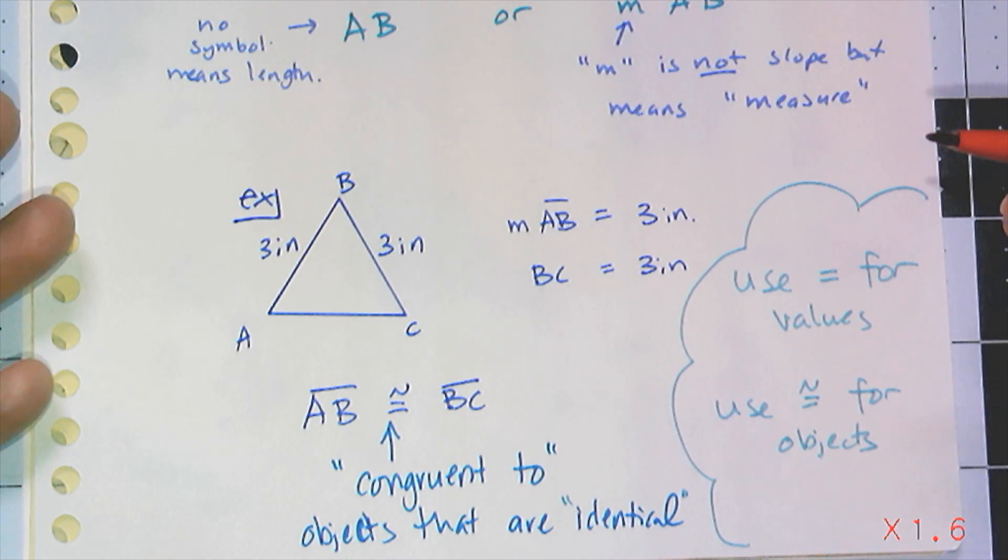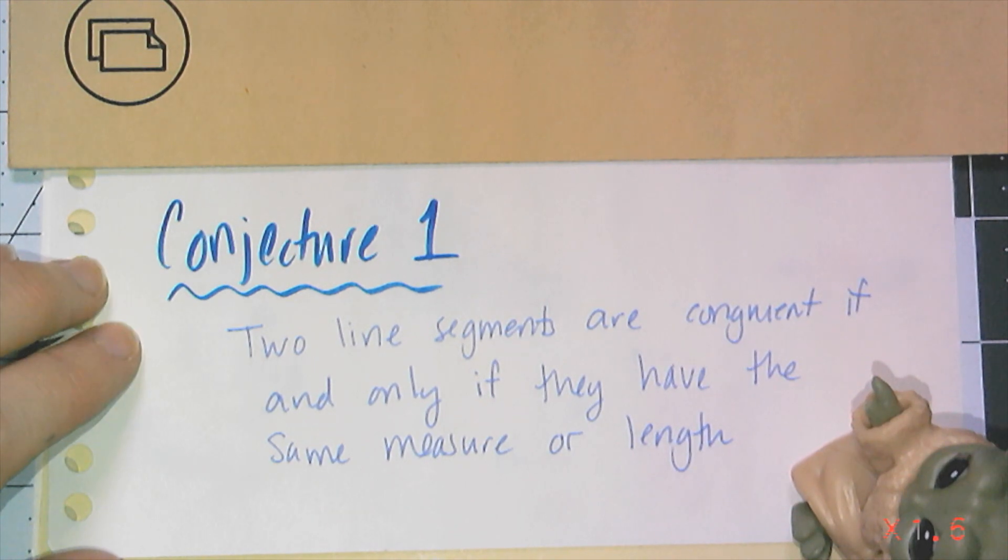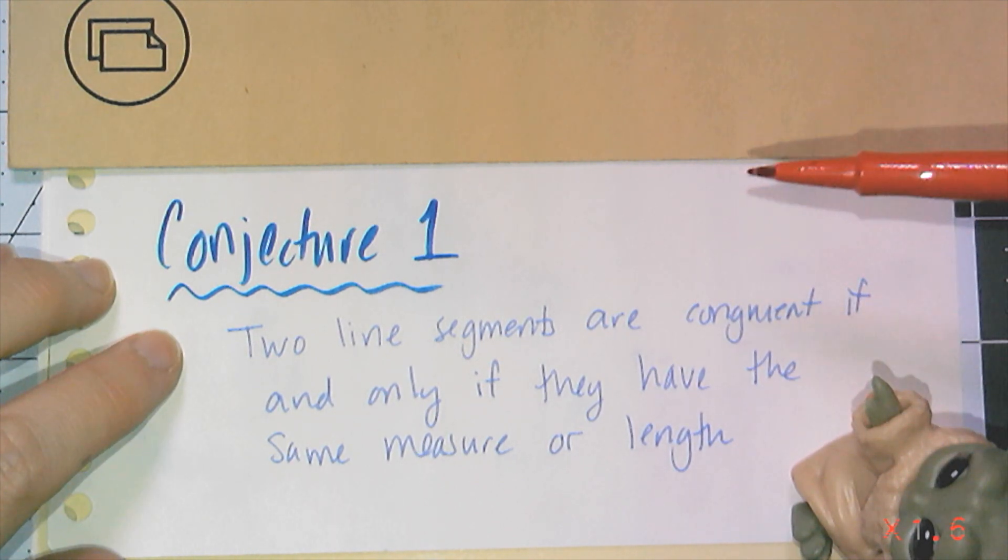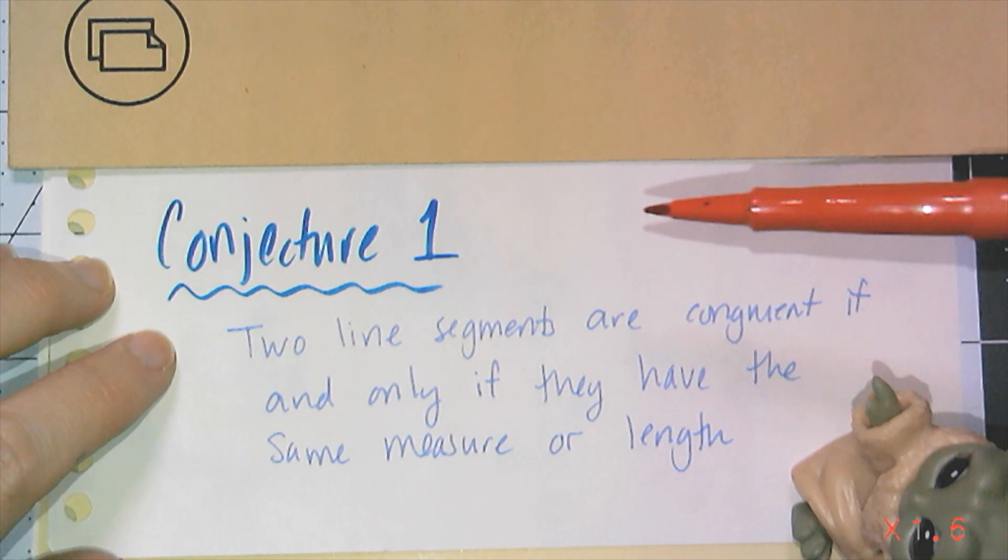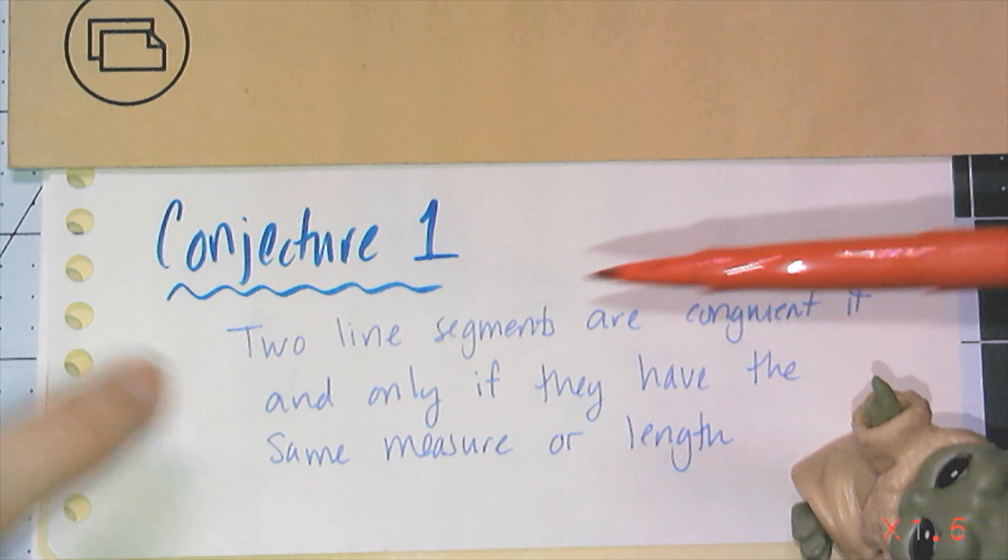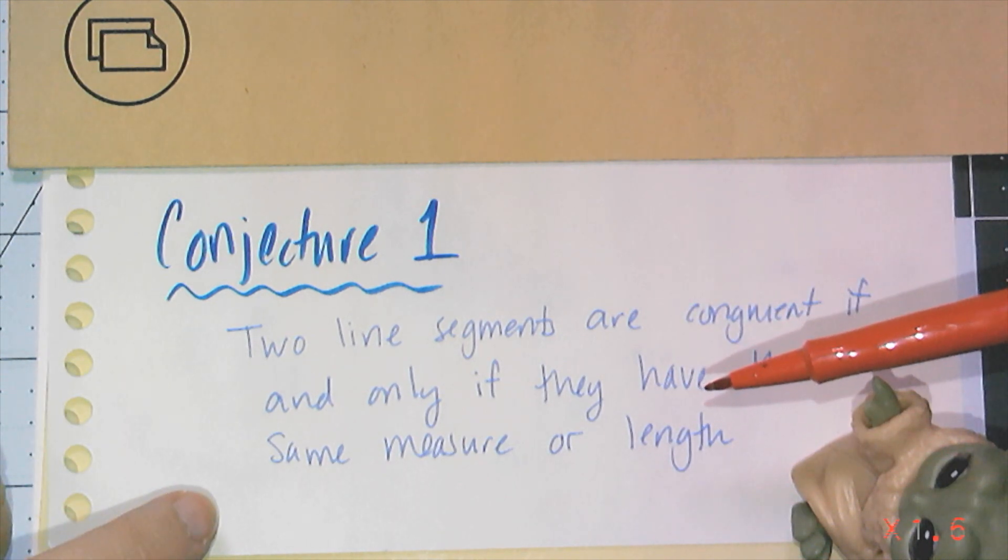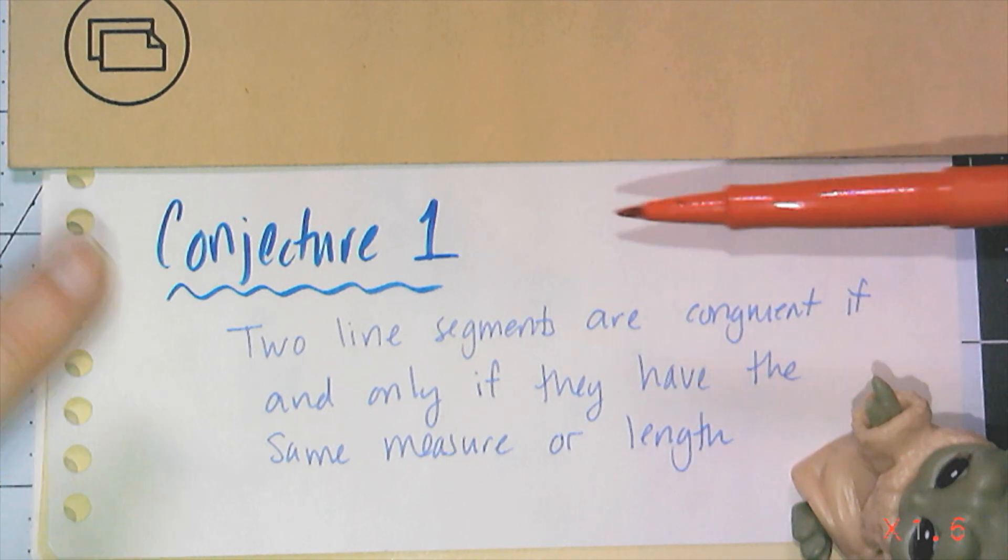In the case of line segments, that means line segments of the same length. This takes us to our first conjecture in geometry: two line segments are congruent if and only if they have the same measure or length. If and only if means this statement is true in both directions. If I have two line segments that are congruent, then their measure is equal. Or if I have two line segments with the same measure, they are congruent.